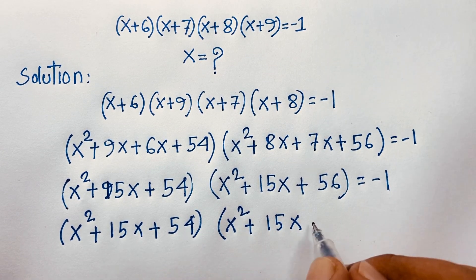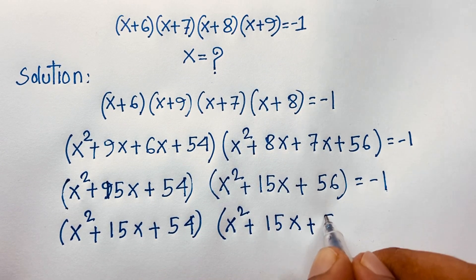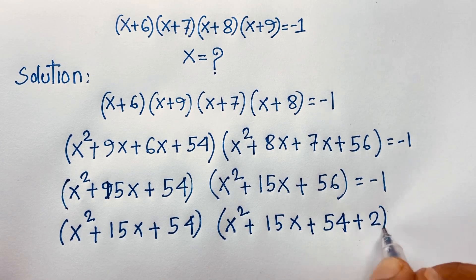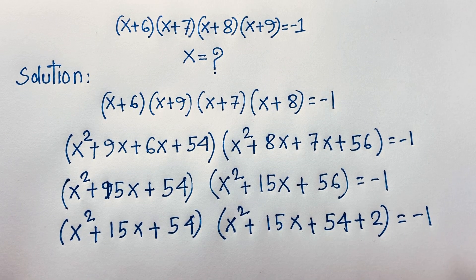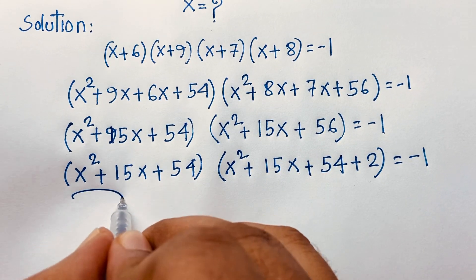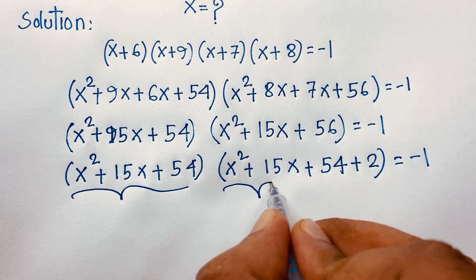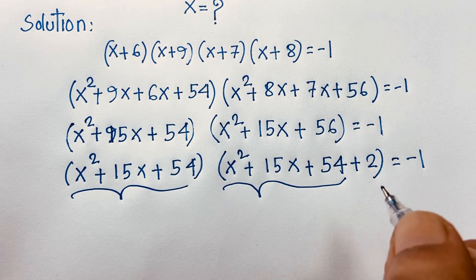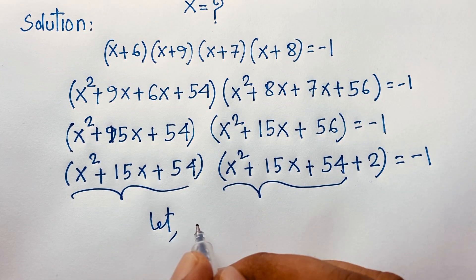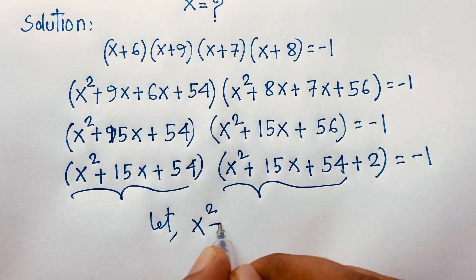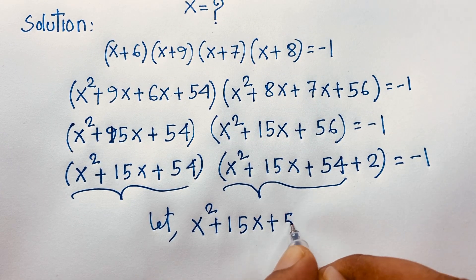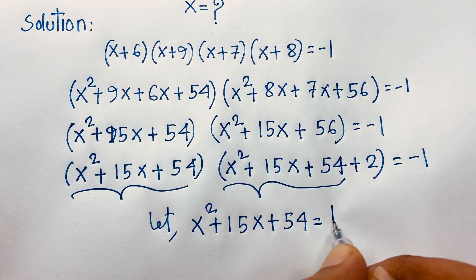Notice that 56 = 54 + 2, so the second expression becomes (x² + 15x + 54) + 2. Now both expressions share the same core. We let t = x² + 15x + 54.